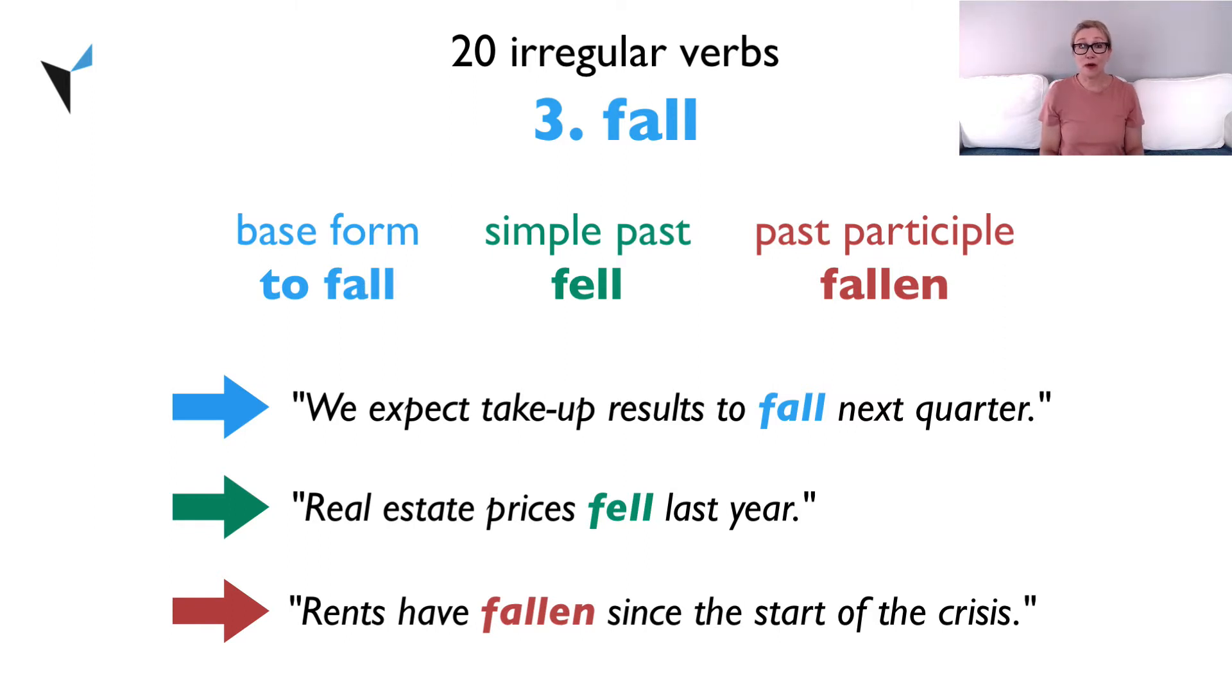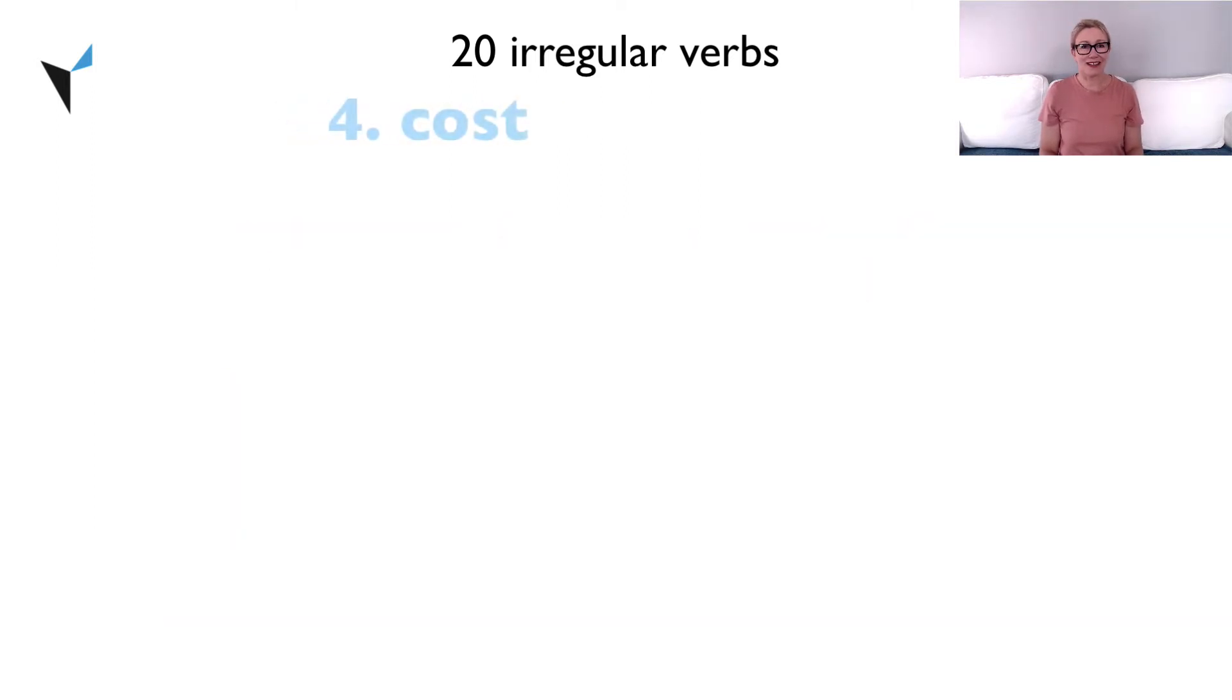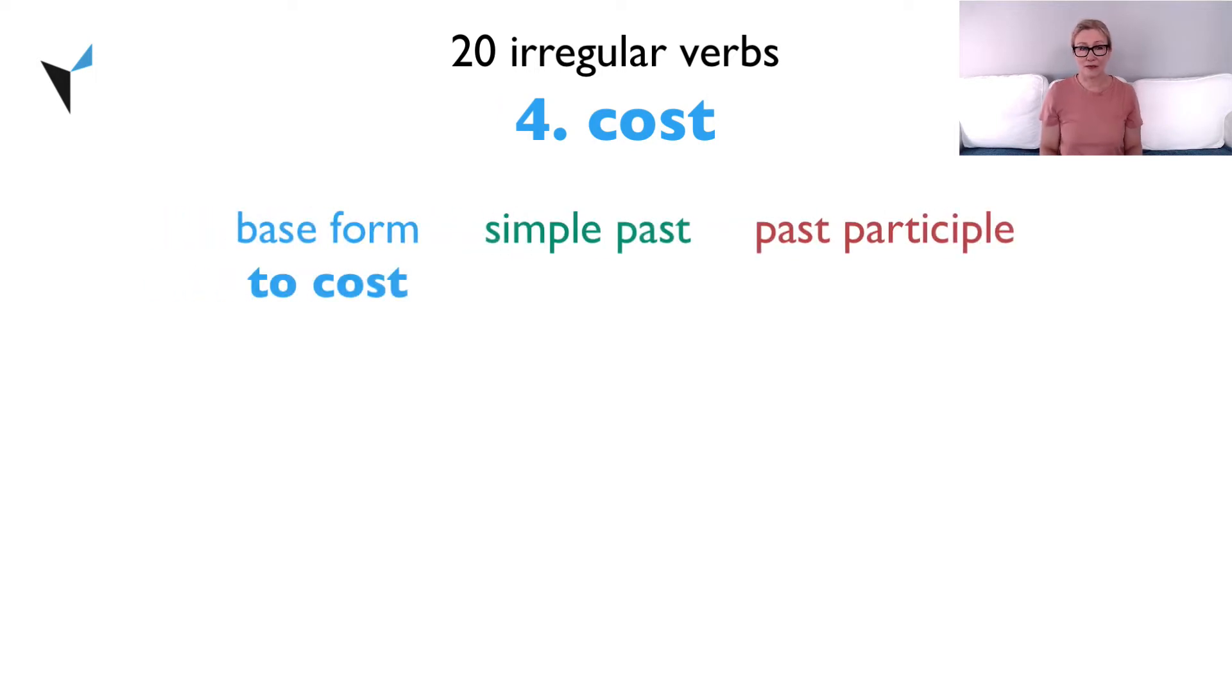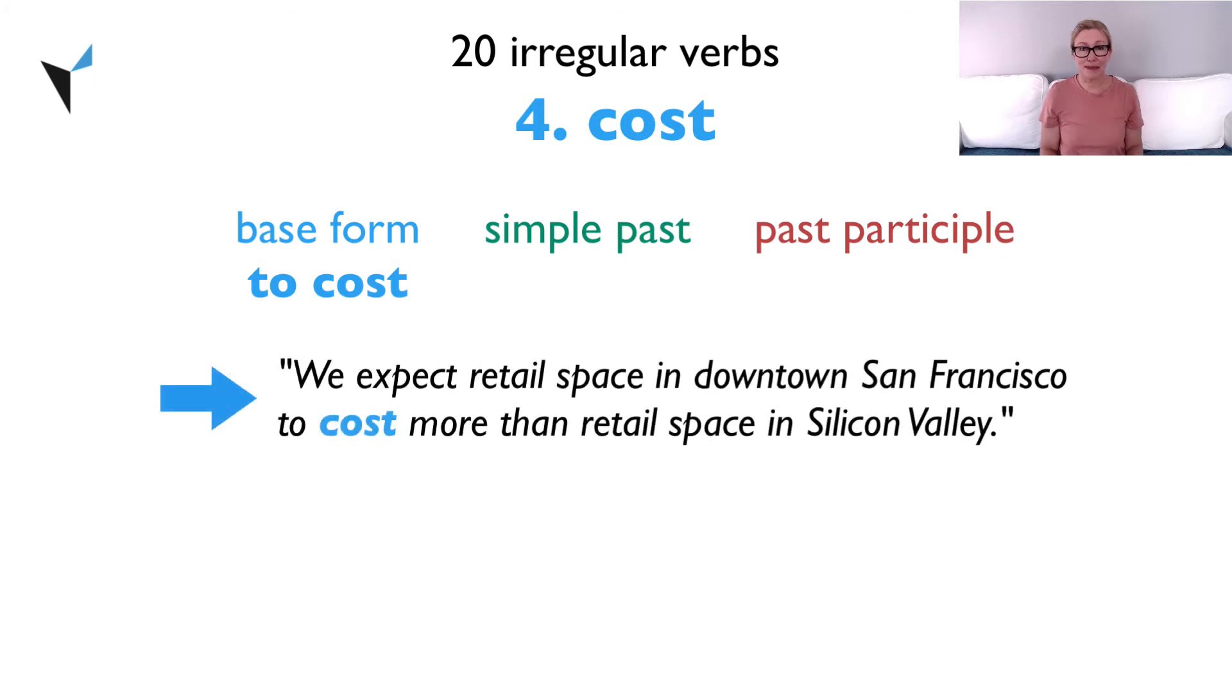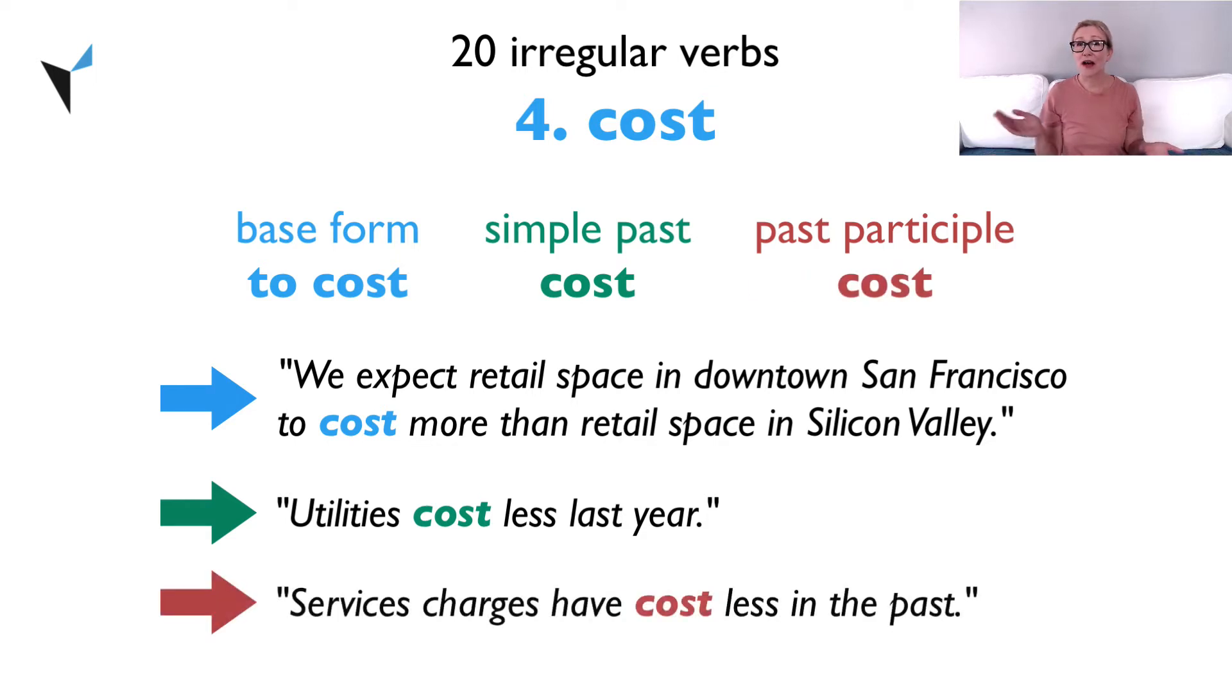Now on to verb four, cost. The base form is to cost. We expect retail space in downtown San Francisco to cost more than retail space in Silicon Valley. The simple past is cost. Utilities cost less last year. The past participle is also cost. Service charges have cost less in the past.